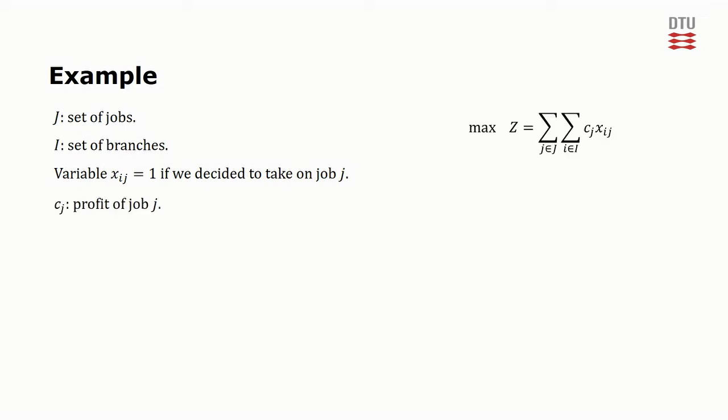Consider some firm or production facility that can take on a number of jobs from the set j. The firm is divided into a set of branches given by i. We associate a binary variable xij with each of the jobs such that xij is 1 if and only if we decide to take the job j in branch i.